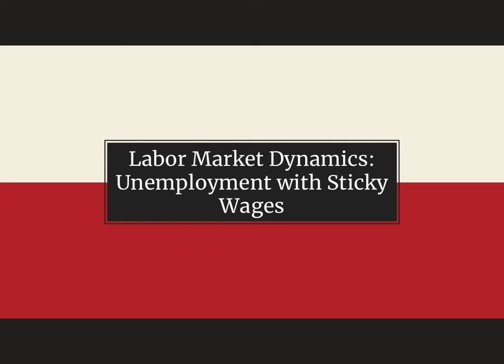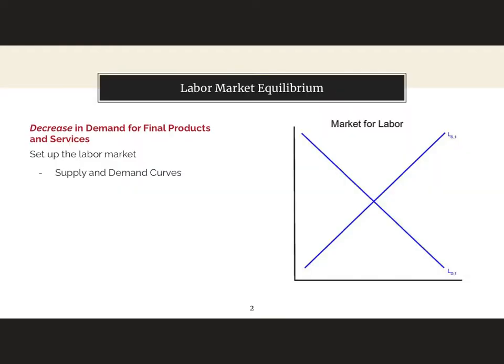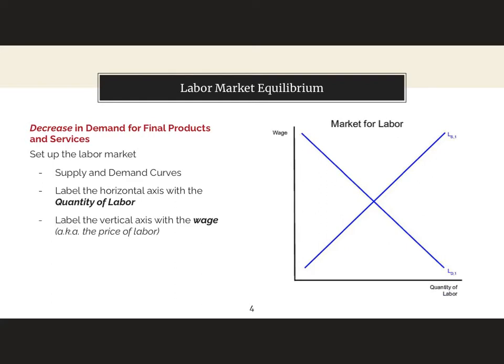In this video we'll demonstrate how unemployment can occur when there are sticky wages in the labor market. Let's start with the labor market equilibrium. I have an upward sloping labor supply curve and a downward sloping labor demand curve. The label for the horizontal axis is the quantity of labor and the label for the vertical axis is the wage, i.e. the price of labor.